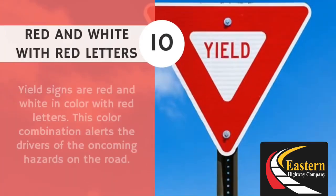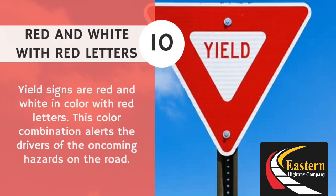Red and white: yield signs are red and white in color with red letters. This color combination alerts the driver to oncoming hazards on the road.